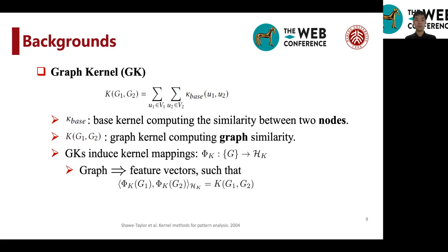Another very important property is that graph kernels induce kernel mappings that map graphs to vector spaces, which might be of infinite dimensions. And the kernel mapping satisfies the property that the inner product of the kernel mappings are the kernel function values.